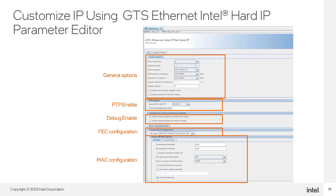Here is a screen capture of the GTS Ethernet Intel Hard IP parameter editor. The first section covers general options where you can set 10G versus 25G Ethernet modes, PLL frequencies, and number of IP instances. Below that, you can enable PTP support and debug capabilities, including support for the transceiver toolkit and the Ethernet toolkit. Near the bottom, you can enable or disable the optional FEC. At the very bottom, the MAC section allows you to enable and disable various options such as max frame size and VLAN support.